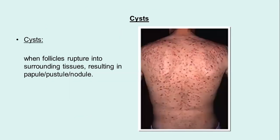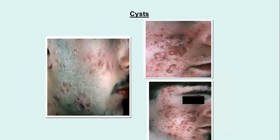When follicles rupture into the surrounding tissue, it results in papules, pustules, nodules, and cysts. These are the cystic lesions you can see.